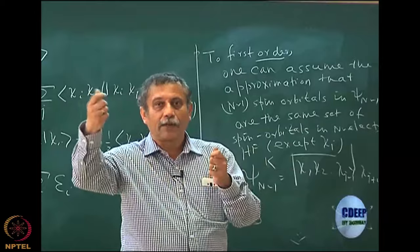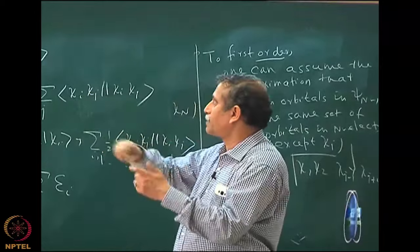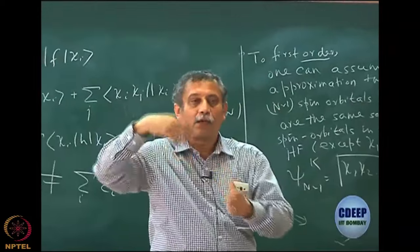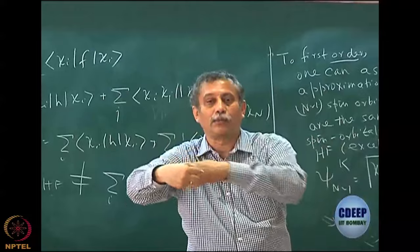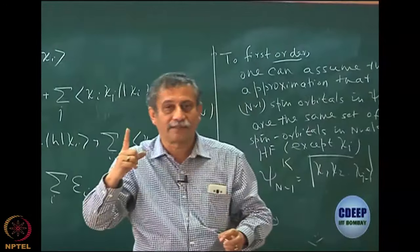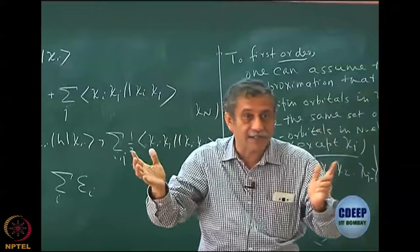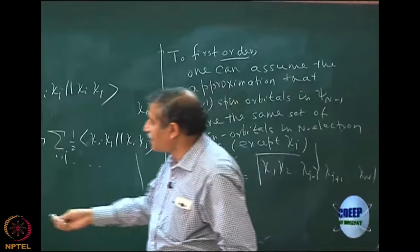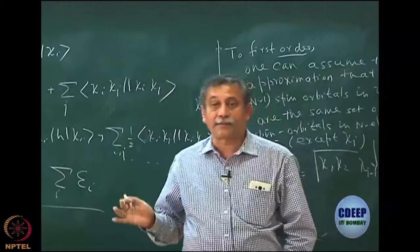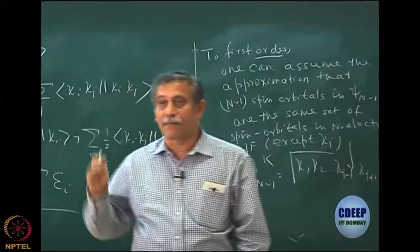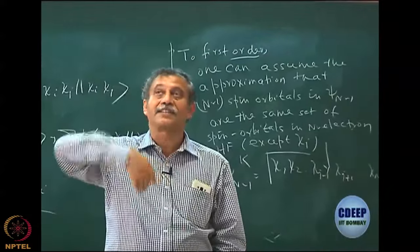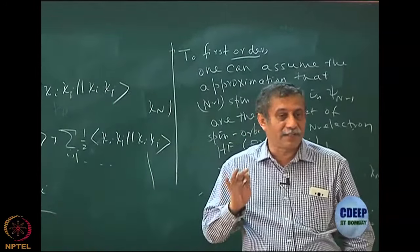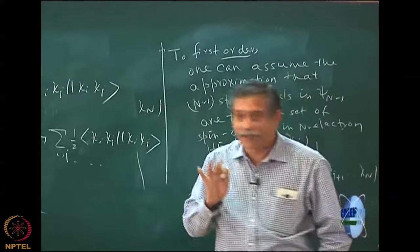That is a difference in the Hartree-Fock energy — you have a factor of one half — which means that the E Hartree-Fock cannot be the sum of the orbital energies. I have discussed this before, but let me repeat: if I take the sum of the orbital energies, this sum will come in without the factor of one half. So what is happening is that the interaction between the electrons is double counted.